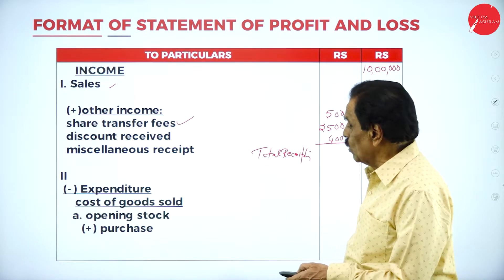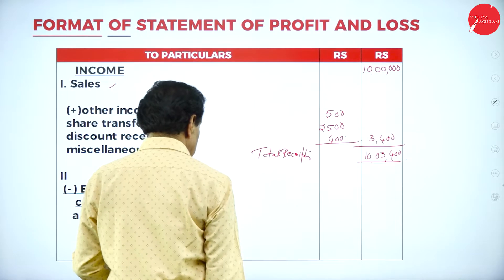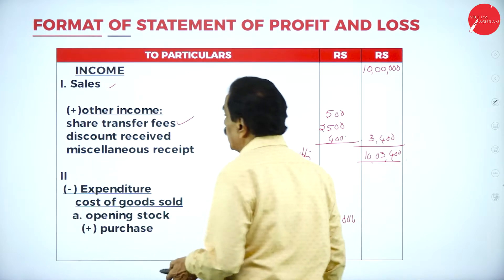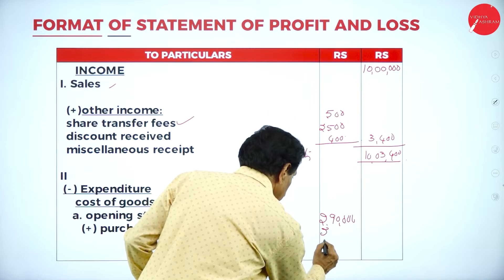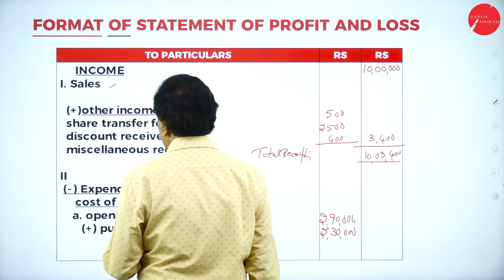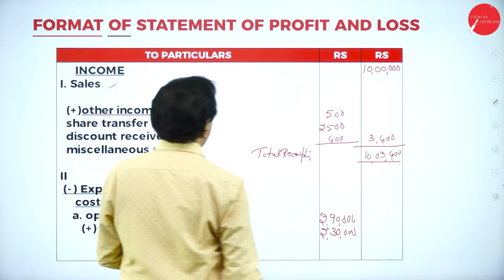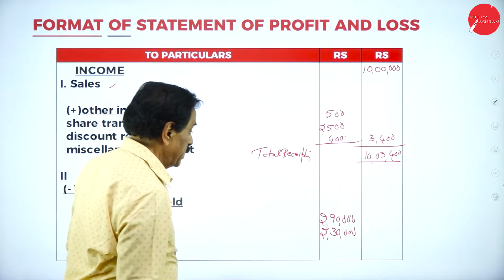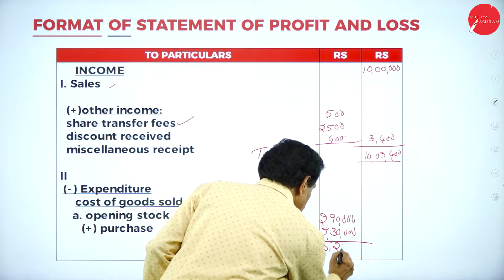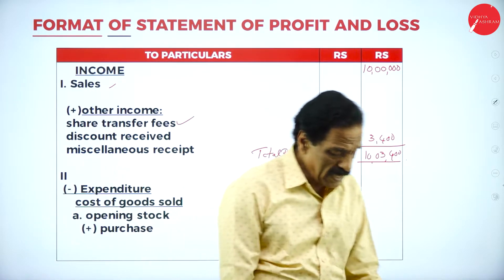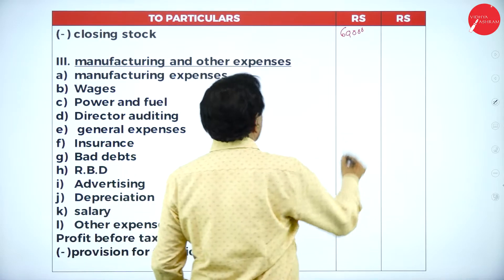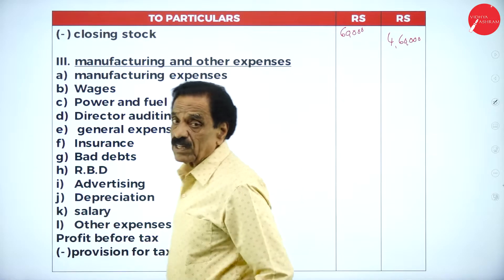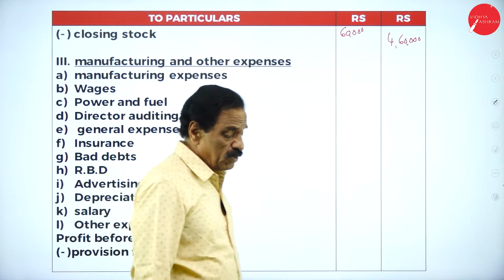Expenditure — cost of goods sold: opening stock ₹2,90,000 plus purchases ₹2,30,000 equals ₹5,20,000, minus closing stock ₹60,000, giving cost of goods sold = ₹4,60,000.